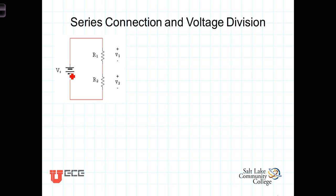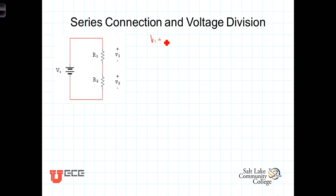First of all, we'll note that this voltage source Vs applies a voltage across those two resistors, and that V1, the voltage across R1, will represent a certain part of that voltage and V2 will represent the rest of it, such that V1 plus V2 must equal Vs.